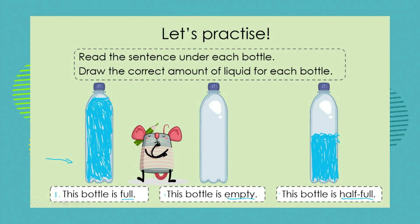Okay, grade ones — so we learned about different words that we use when talking about capacity: overflowing, full, half full, and empty. I want you to go look around your house and practice using these words by looking at different containers, which may be empty, half full, full, or maybe even overflowing. Thank you for joining me today — until next time, thank you and goodbye.